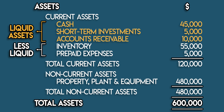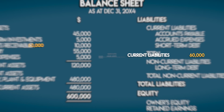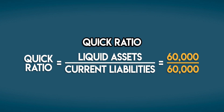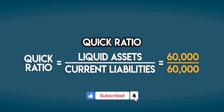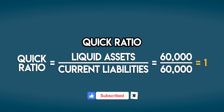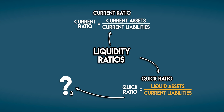$45,000 plus $5,000 plus $10,000 gives us $60,000 in liquid assets. So Scooby's Spooky Stories has a quick ratio of $60,000 in liquid assets divided by $60,000 in current liabilities, which is 1 to 1. It seems our bookstore is balancing on a knife edge — it has just enough liquid assets to cover its short-term obligations.